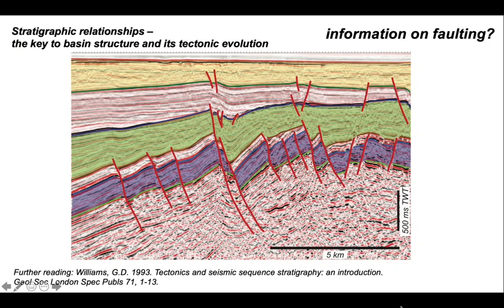We've seen some of the classical stratigraphic relationships that we find in rift basins and they're the key to understanding basin structure and its tectonic evolution.